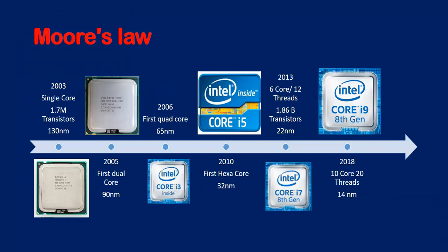In 2010, the first hexa-core processor, the i5, came with a size of 32 nanometers. In 2013, a six-core, 12-thread processor came with 1.86 billion transistors in only 22 nanometers — that was the i7 processor. In 2018, we have the i9 processor with 10 cores and 20 threads in a chip size of 14 nanometers.